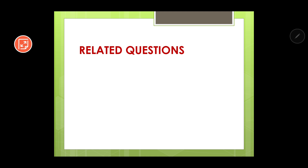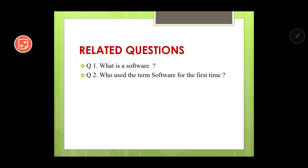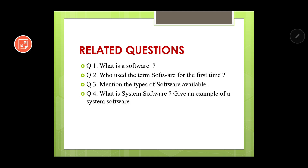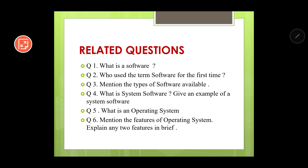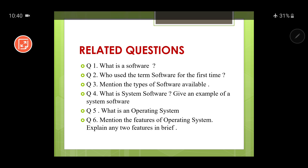I will give you some related questions that you need to solve. First, write the definition of software. Second, who used the term software for the first time? Third, mention the types of software available — just write the names. Fourth, write what is system software and give an example. Fifth, write the definition of operating system. Sixth, mention the features of the operating system and explain any two features in brief. I hope this session is useful. I will see you again in part 2 of this chapter.